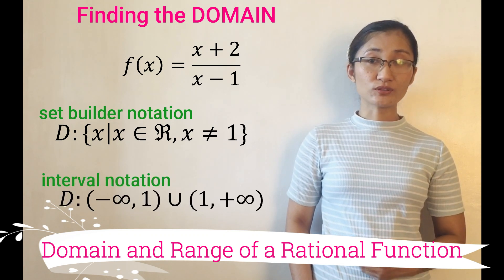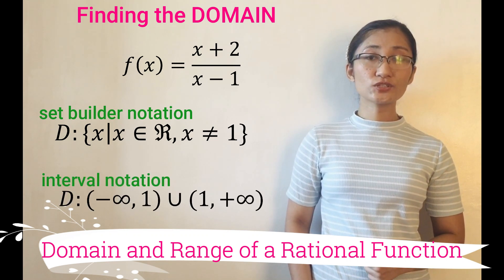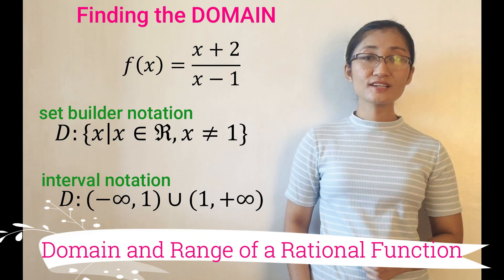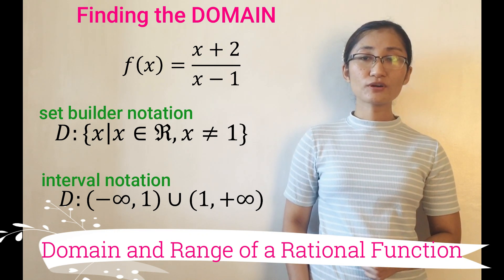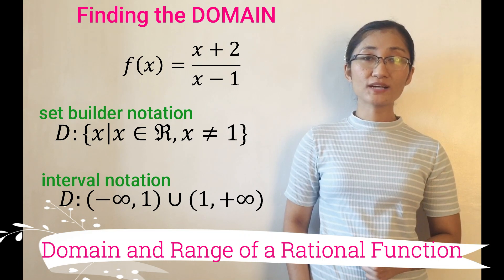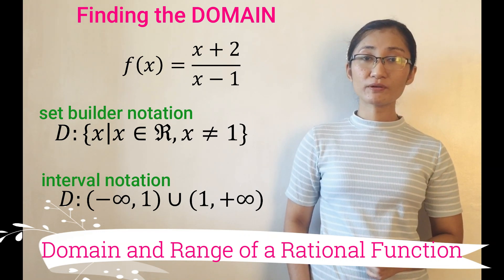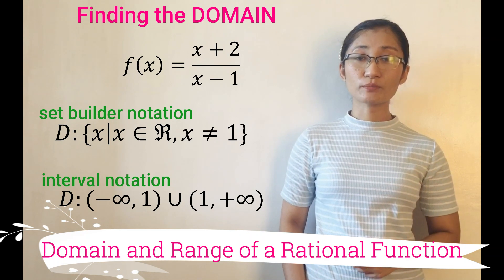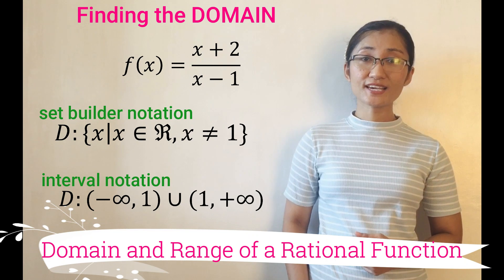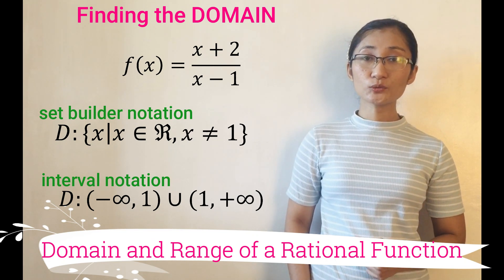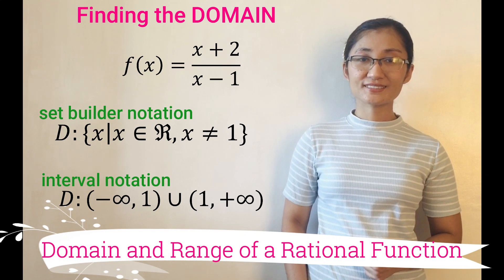Or, through interval notation, domain is the union of the intervals from negative infinity to positive 1 exclusive, and from positive 1 exclusive to positive infinity. We use open parentheses for positive 1 in both intervals since positive 1 is not included. Had it been included, then we would use brackets.